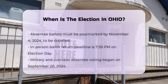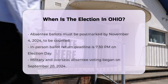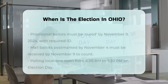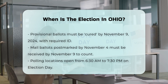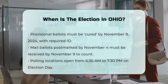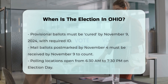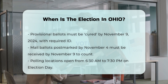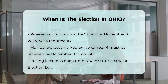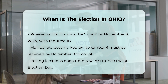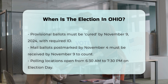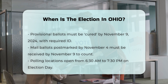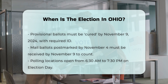Additional guidelines: Military and Overseas Absentee Voting — this process began on September 20th, 2024, for those eligible. Provisional Ballots — if you voted on a provisional ballot, you have until November 9th, 2024, to cure it by providing the required ID at your Board of Elections.